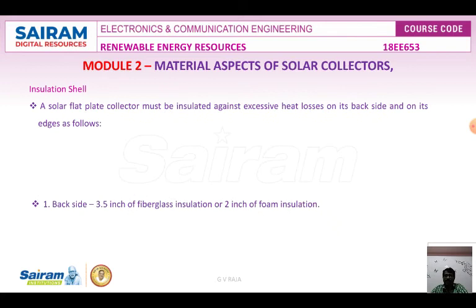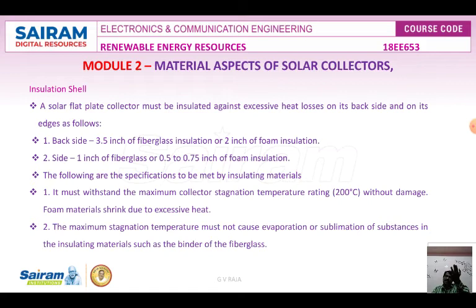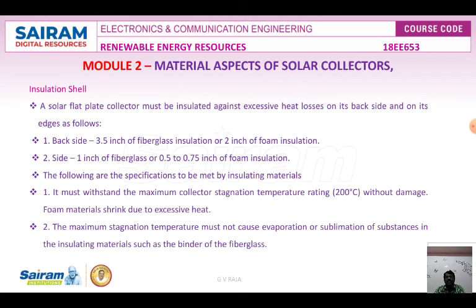The insulation cell is at the bottom of the collector. The top is the absorber, the middle is the glazing material, and the bottom is the insulation to avoid heat loss. For solar flat plate collectors, insulation is applied on the back side and edges — 3.5 inches of fiberglass insulation or 2 inches of foam insulation on the back, and 1 inch fiberglass or 0.5 to 0.75 inches of foam insulation on the sides.